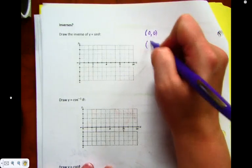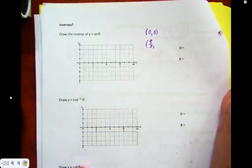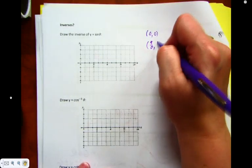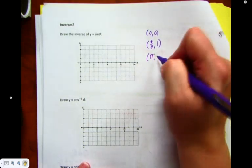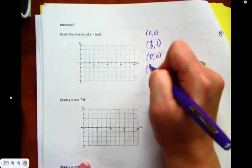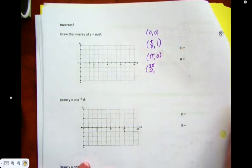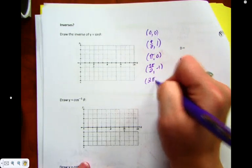Zero is zero. Pi on two. Pi, negative zero. Three pi on two, negative one. Two pi, positive zero.